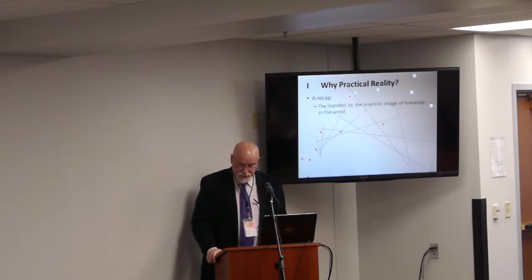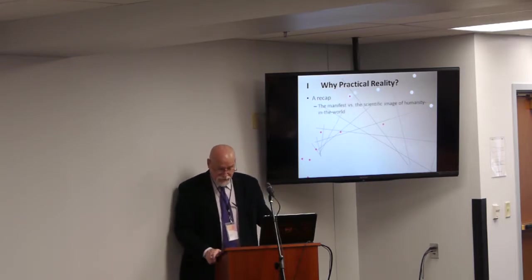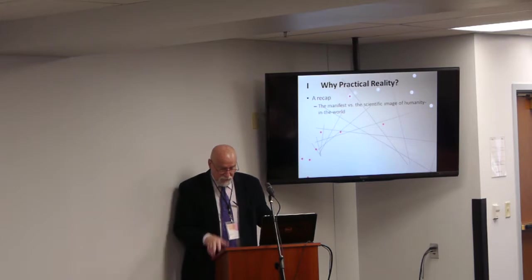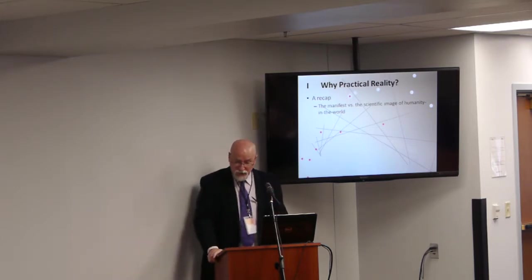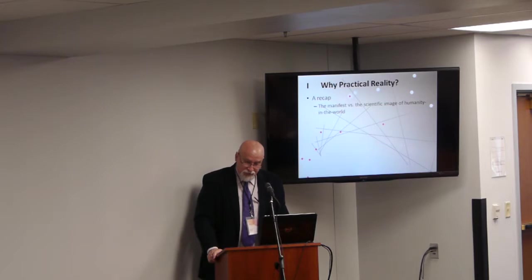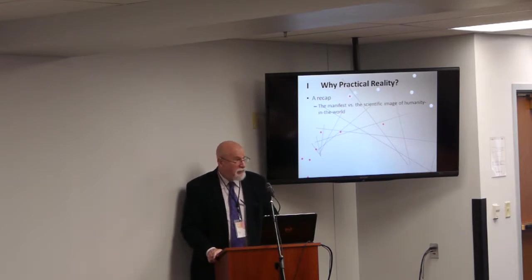Sellars draws a now familiar distinction between the manifest image and the scientific image of humans in the world. This is going to be old hat to I think just about everyone here. The manifest image is the conceptual framework in terms of which we came to understand ourselves as persons and in terms of which at the present time we ordinarily comprehend our nature and our place in the world. The scientific image contrasts with the manifest image insofar as it employs postulational methods in developing theories to explain the way the world wags. This image, the scientific image, according to Sellars, is still a warning. It is yet partial and gappy, however full of promise it may be.